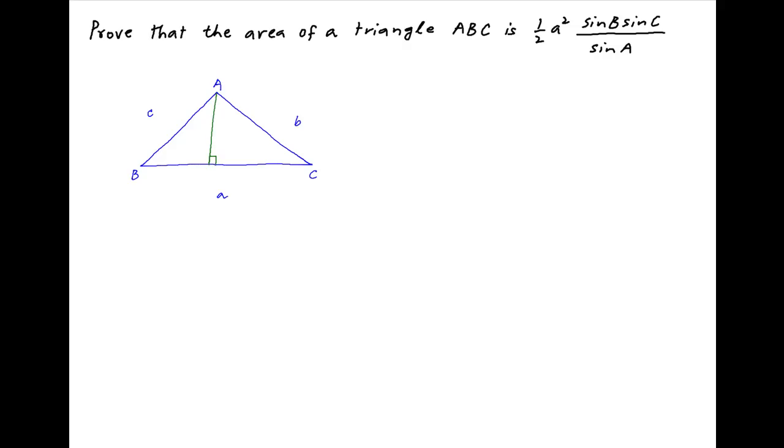Now draw a perpendicular from the vertex A onto the side BC opposite to it. Let the foot of the perpendicular be N.